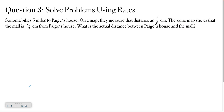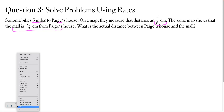Now this time they don't give you a picture, so pay attention to what information you know — both the map distance and the real distance. Sonoma bikes five miles to Paige's house; on a map, they measure that distance as five sixths of a centimeter. That same map shows that the mall is three and a half centimeters from Paige's house. What is the actual distance from Paige's house to the mall? Go ahead and set this up and solve it. Good luck.